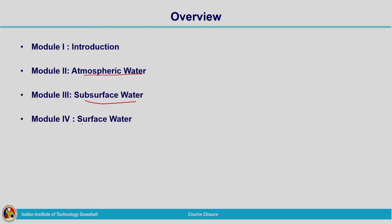The fourth module was related to surface water — water present on the surface of the earth. Under these three modules, modules 2, 3 and 4, we covered in detail the different hydrologic processes related to atmospheric water, subsurface water, and surface water. All these are interconnected by means of the hydrologic cycle; we have seen how water can be converted from one form to another. This is an endless process, and different processes under different phases of water were covered under these three modules.